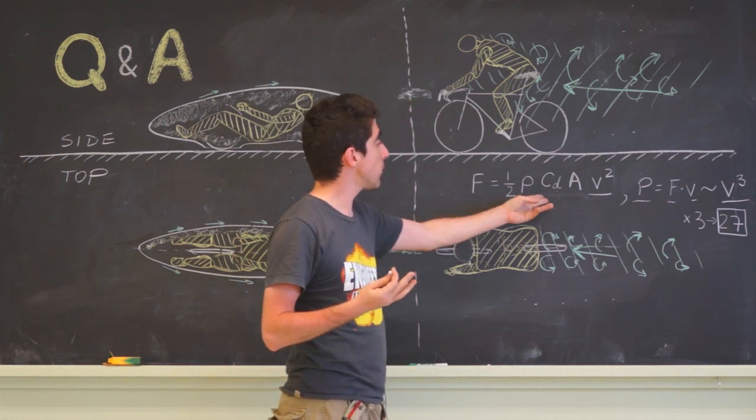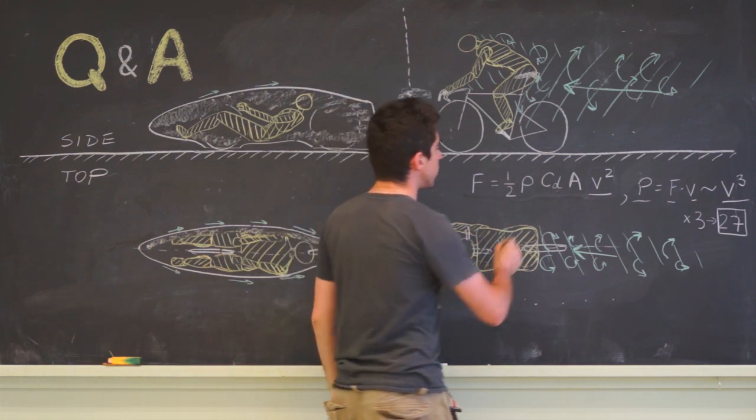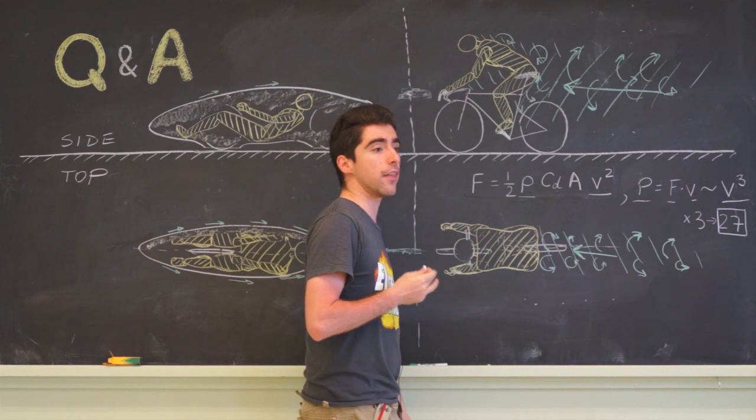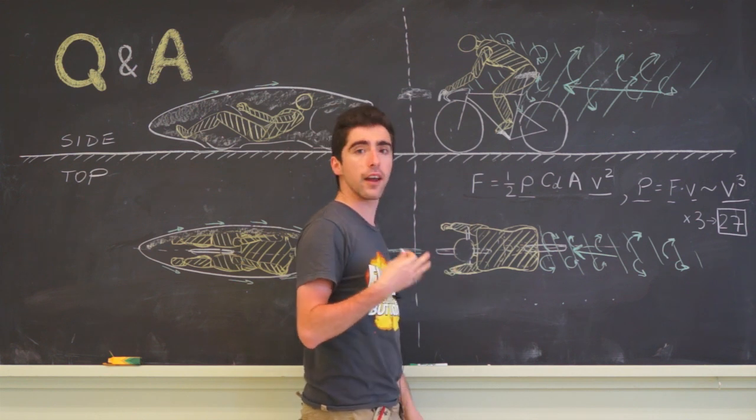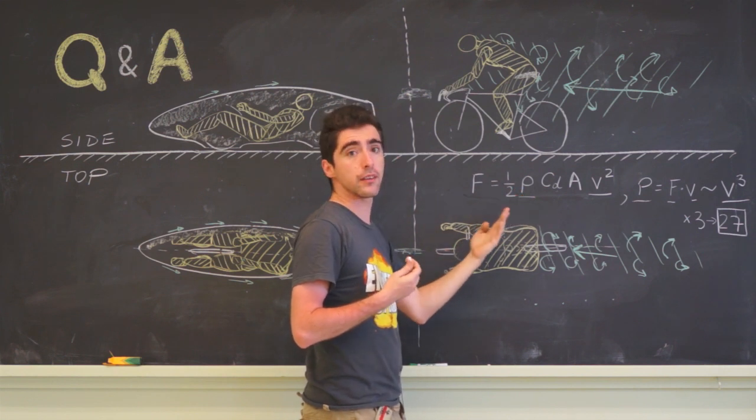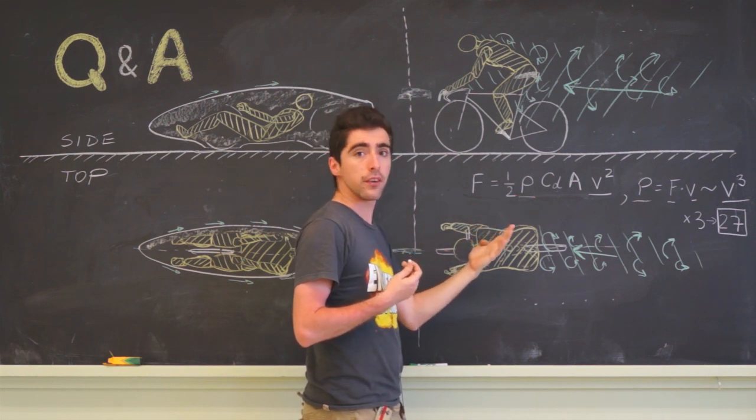So what can we do about it? Well, let's look at the equation for the force. It contains the density of the air, and that means we can go somewhere where the air has less density—that is higher up. Now the race we go to is at 3000 feet altitude.